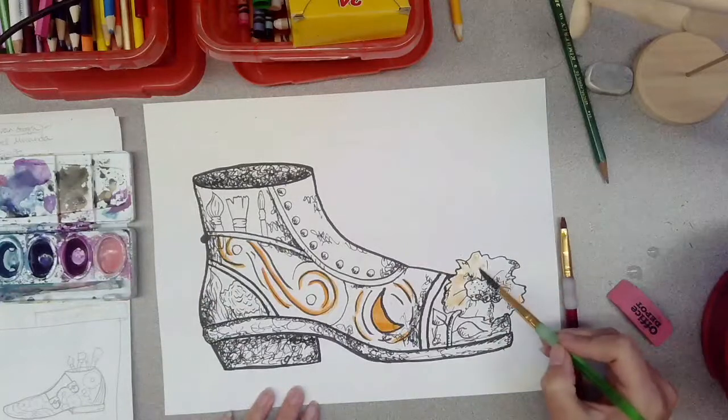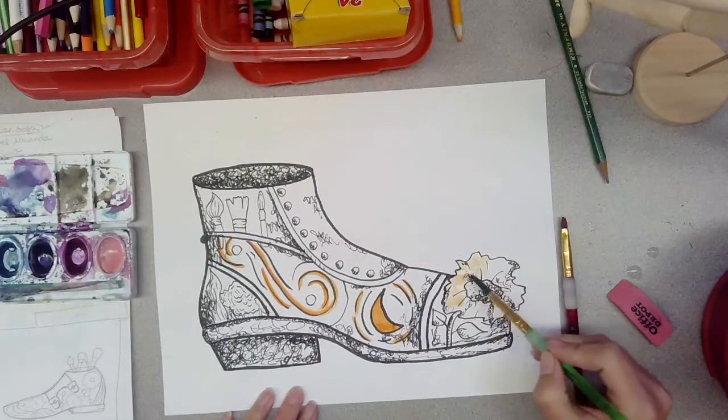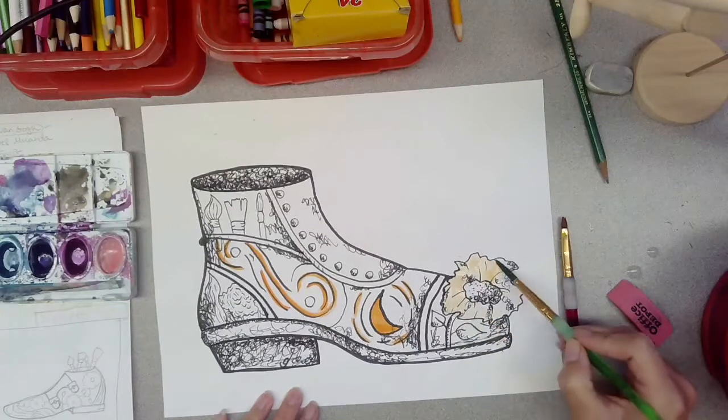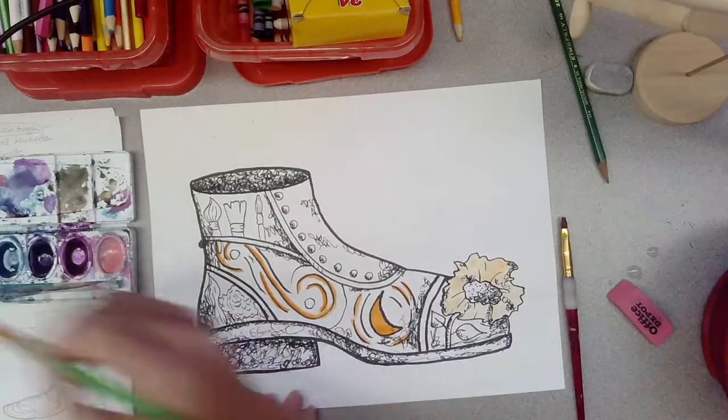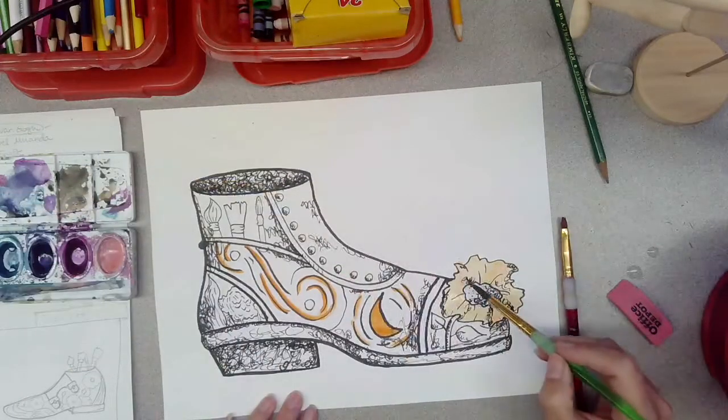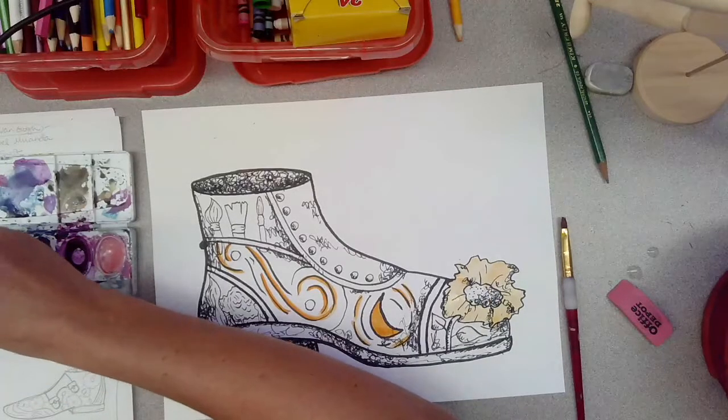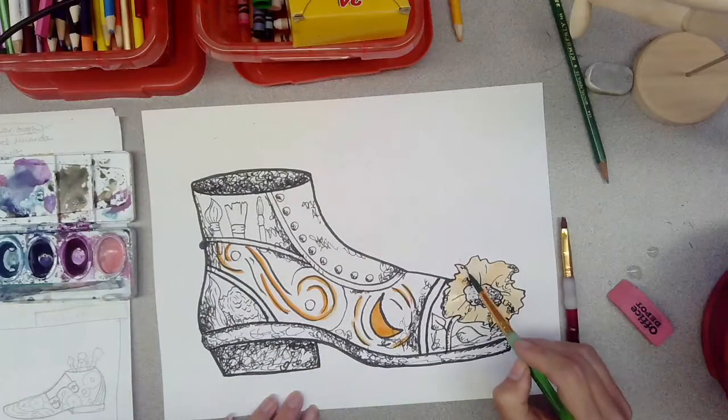On this flower, notice how it is a paler version of orange because I have more water on my brush. This is a lot more vibrant, but it's the same orange, the same color. Treat your brush nicely. If you get outside the line, take that as an opportunity to adjust the design of the piece.